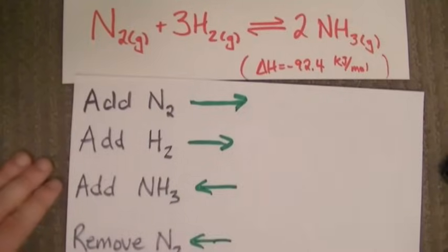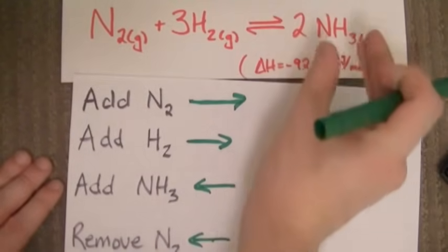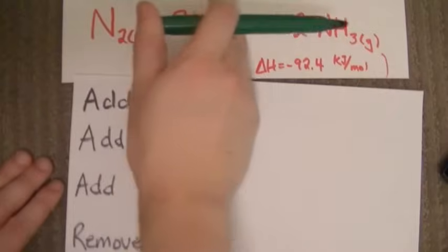Hopefully it's obvious by now that if we removed some ammonia, we want to replace it by shifting the equilibrium to the right. And that's exactly what happens qualitatively.